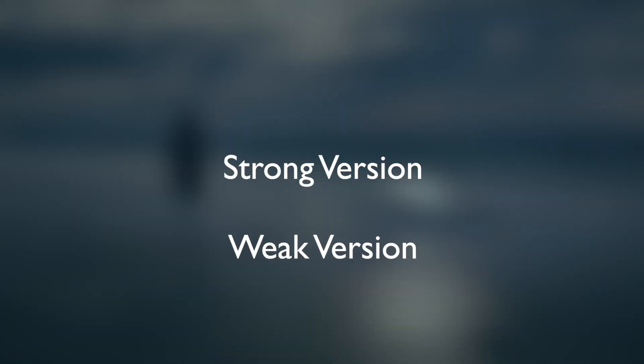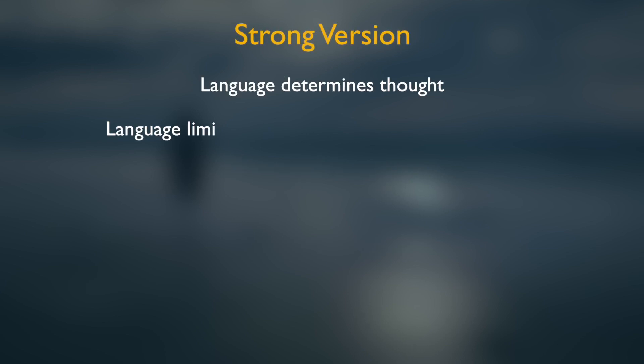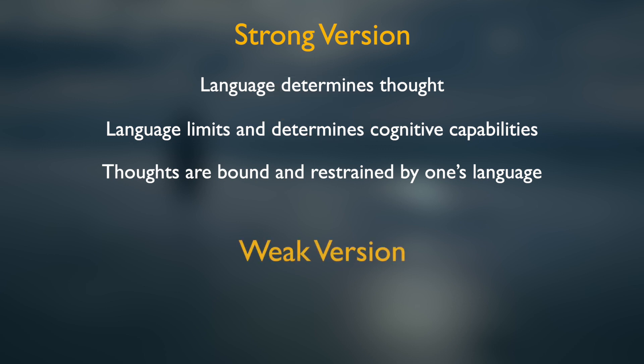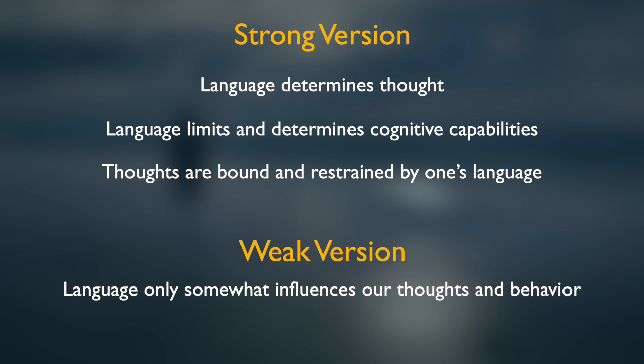The Sapir-Whorf hypothesis can be divided into two versions: the strong version and the weak version. The strong version says that language determines thought and that language limits and determines cognitive capabilities — that is, one's thoughts are bound and restrained by one's language. The key word here is 'determine.' The weak version says that language only somewhat influences our thoughts and behavior. The key word here is 'influence.' Believe me, you will find this fascinating.